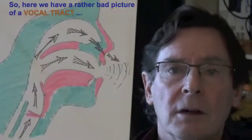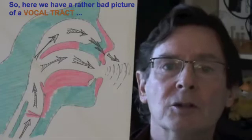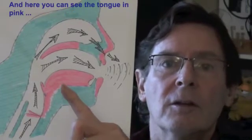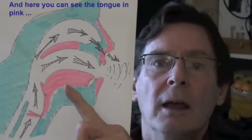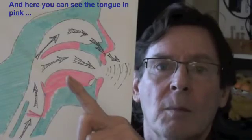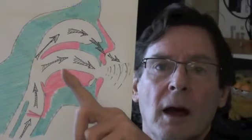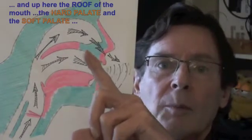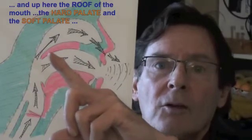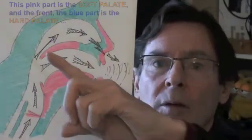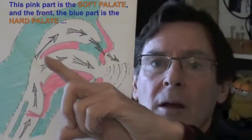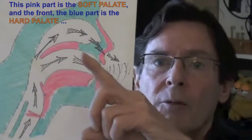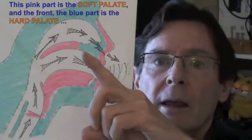Here we have a rather bad picture of a vocal tract. You can see the tongue in pink, and up here the roof of the mouth — the hard palate, the soft palate. This pink part is the soft palate, and the front blue part is the hard palate.